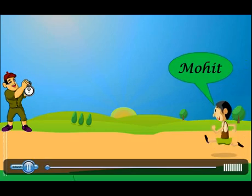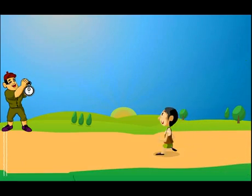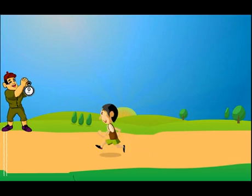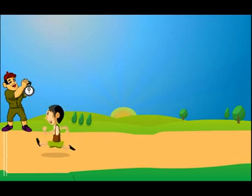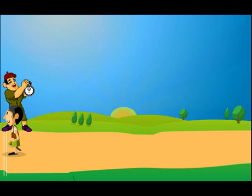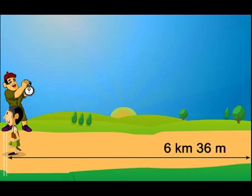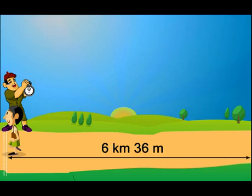There was this boy Mohit. He was a very good athlete. Now on one fine morning, he was practicing and his coach noticed that Mohit ran 6 kilometers 36 meters in one hour. Now note one thing here, Mohit ran at the same speed in every instant of time in this one hour.